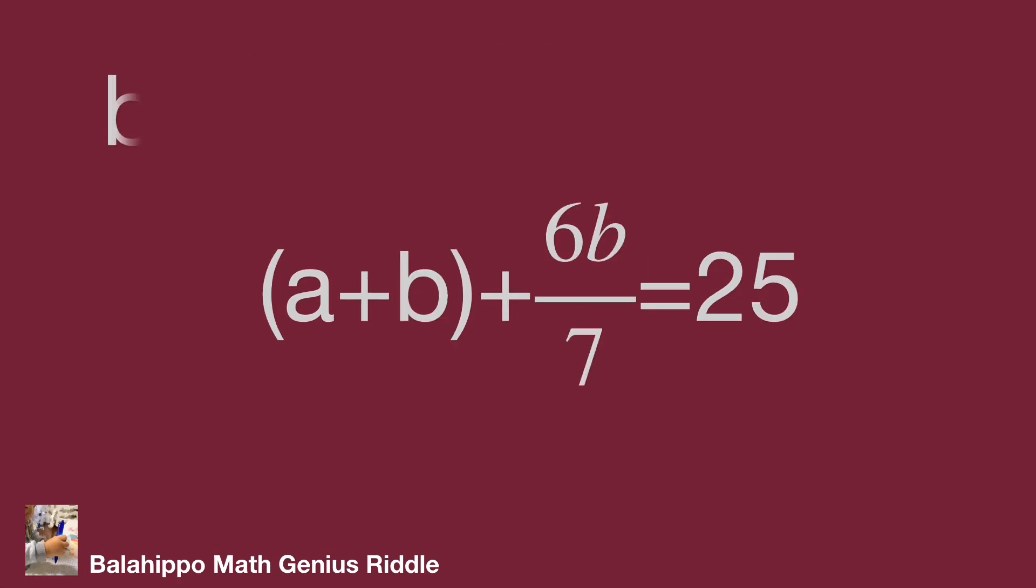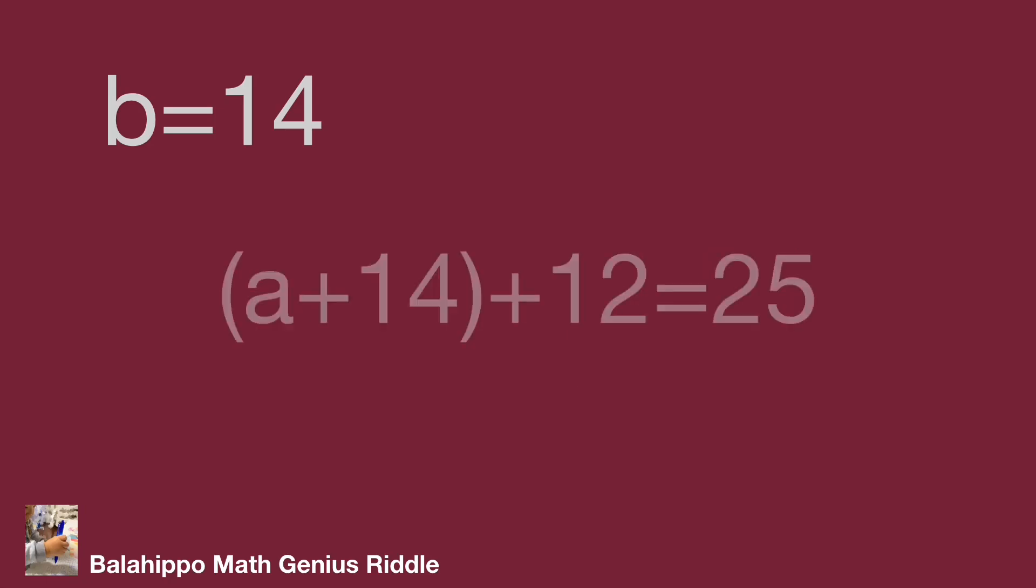When b equals 14, substitute b by 14: a plus 14 plus 12 equals 25. We get a equals negative 1. A becomes a negative number, so it's not the answer.